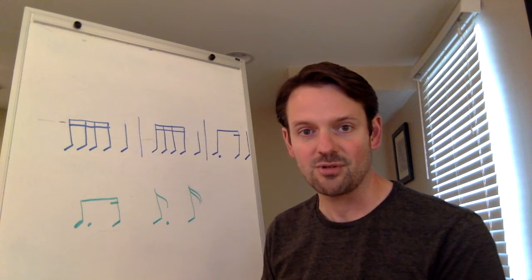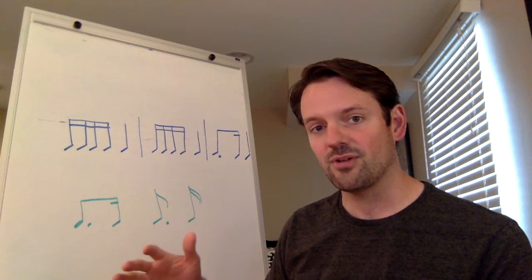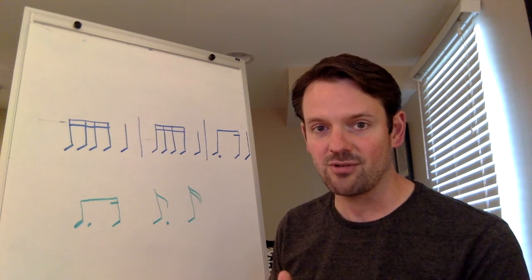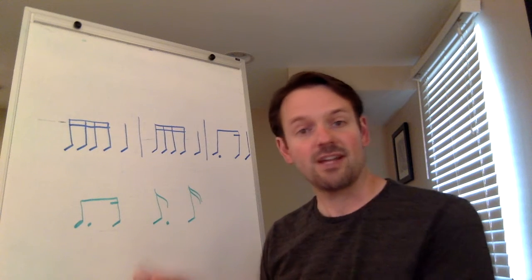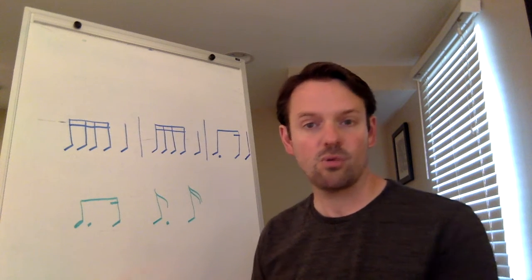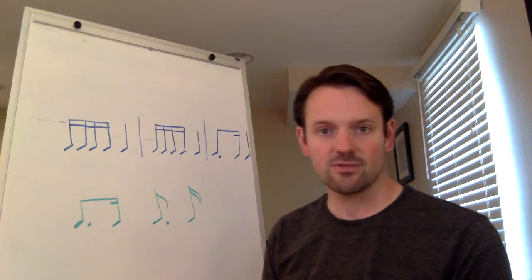Those subdivisions are eighth notes. So every time you have a dotted note, you take the note value that's shorter than that note, and you just have three of that note value. So, a dotted half note is three quarter notes. A dotted quarter note is three eighth notes.